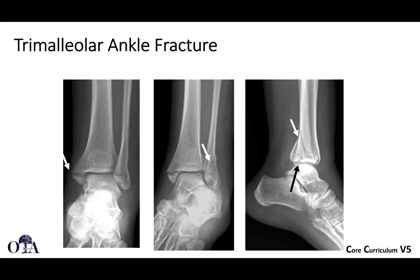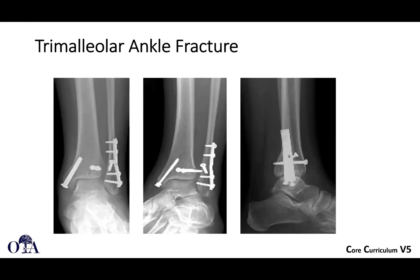Here's an example of a trimalleolar ankle fracture — there's a medial malleolus fracture, a lateral malleolus fracture, and it looks like there's a posterior malleolar fracture also. This is fixed with partially threaded screws probably acting in lag technique, some additional lag screws, and what is probably a neutralization plate and screws on the fibula. A lot of the terminology we talked about in the last video should be applicable to describing what was done here.